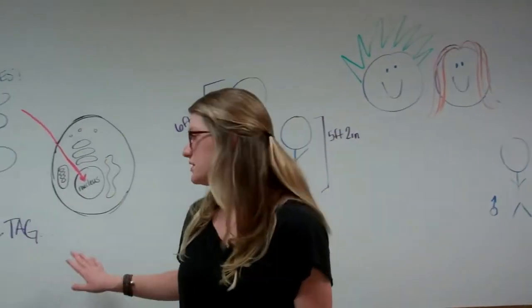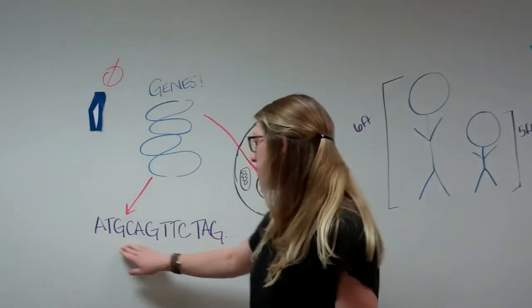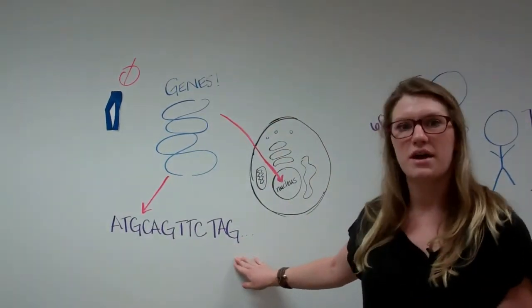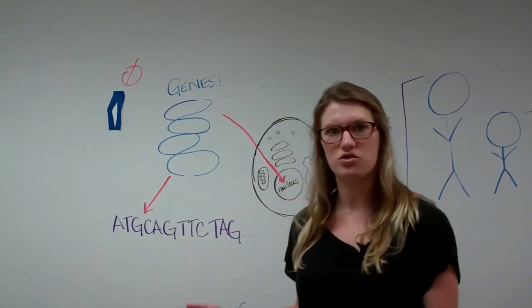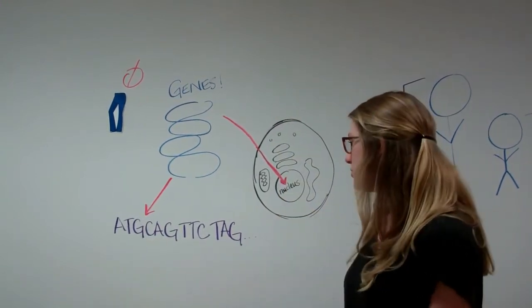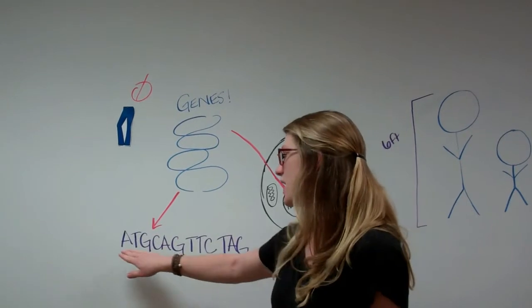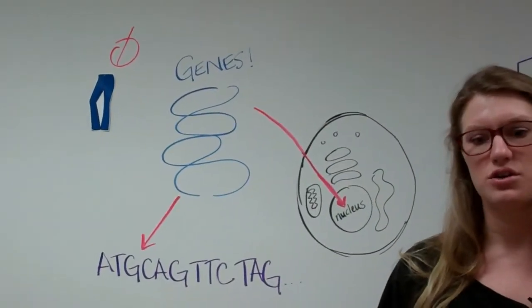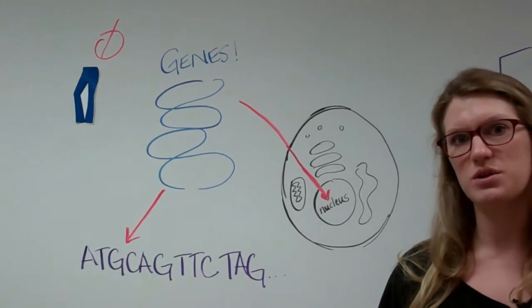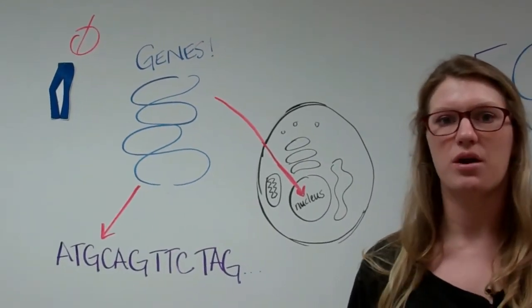So genes are made of DNA and DNA makes up a code. And it's this code that can differ among animals. And it's this code that determines what traits you have. And so let's look at how scientists can use this code and use differences in that code to determine how related two species can be, so that they can better organize them.